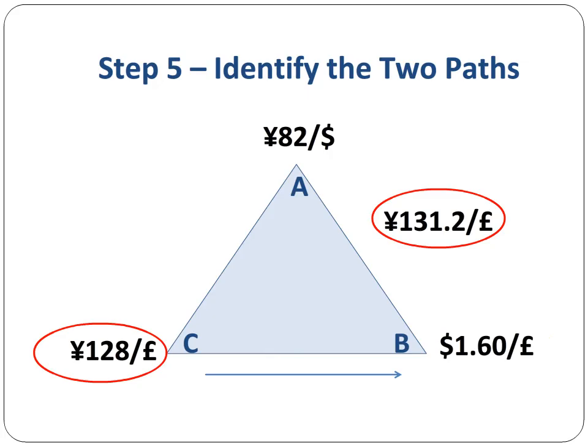Our goal is to sell the yen and buy the yen back to wind up with a higher yen amount. There are two possible ways to do this. Since Bank C is prepared to trade yen for pounds, we can first sell yen to Bank C for pounds. We then take our pounds to Bank B and convert them to US dollars. Our last transaction will be with Bank A to sell dollars and buy yen. If we wind up with more yen than we started out with, we have made an arbitrage profit.